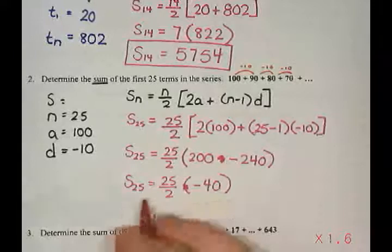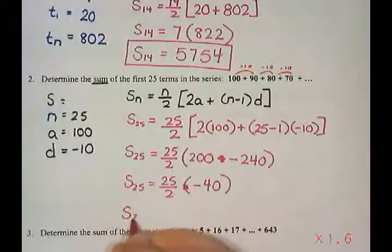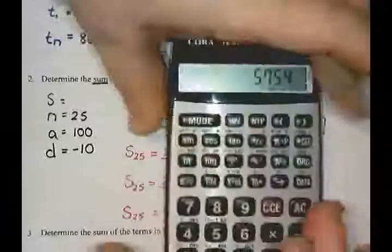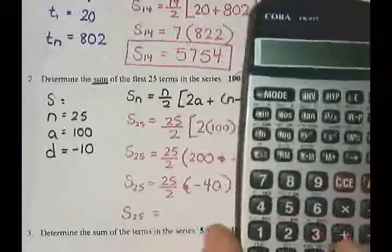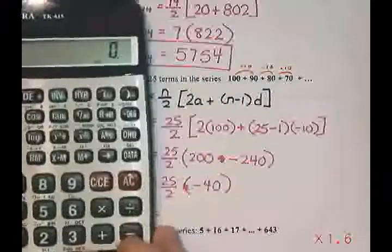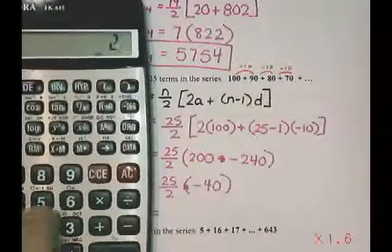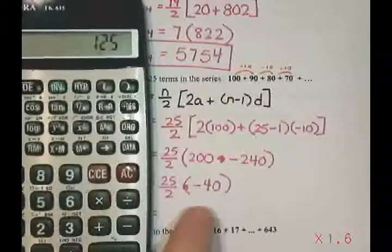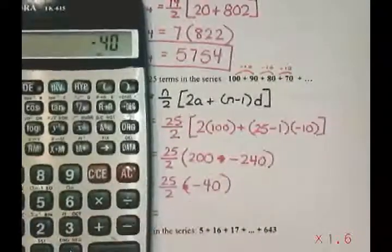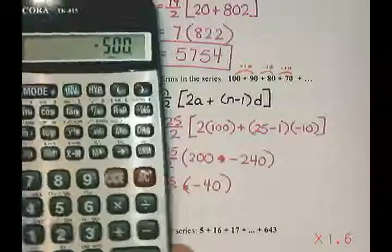And then all I need to do is I'm going to do this last part on my calculator. So I'm going to do 25 divided by 2 times negative 40. And I get negative 500.